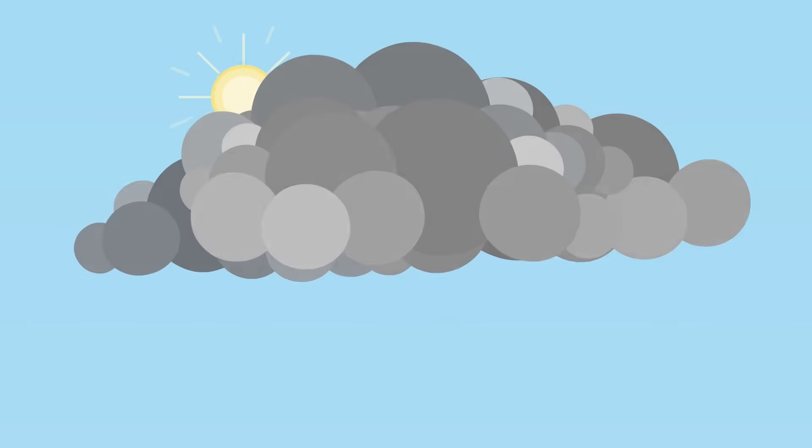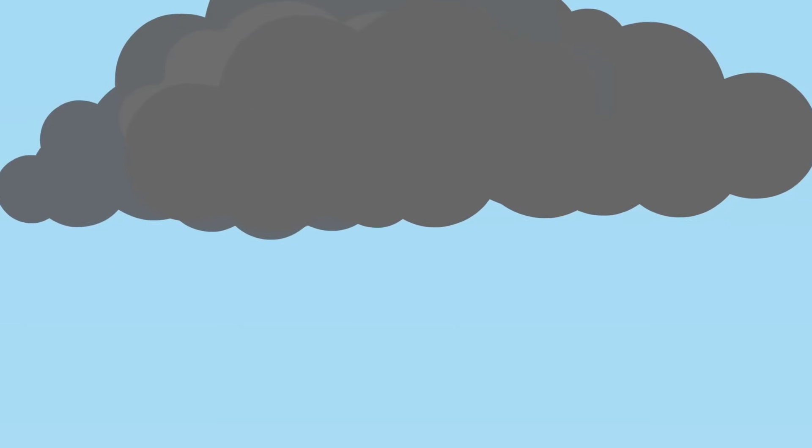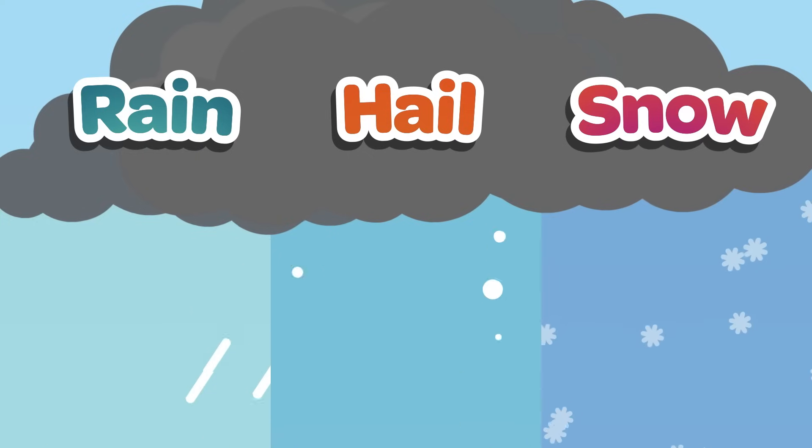As these droplets of water join together to become bigger drops, they become too heavy to stay in the air and fall back down to earth as rain, hail or snow. This is known as precipitation.